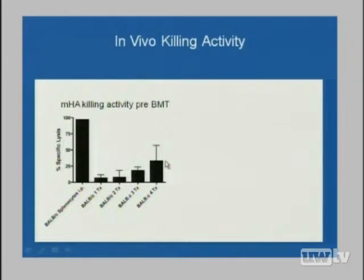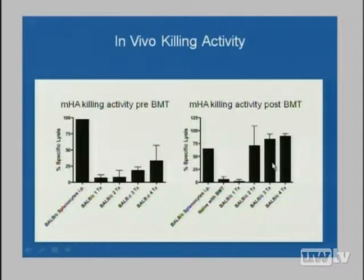This is very important from a laboratory medicine standpoint: whereas only about 40% of these animals are demonstrating statistically significant killing of targets, all of these animals reject their marrow. So even if you were to devise such a test in humans, its predictive power would probably be poor at this point in the process. If you do the same experiments after rejection has occurred, you find essentially 100% kill — suggesting the bone marrow transplant itself is also an immunizing event.